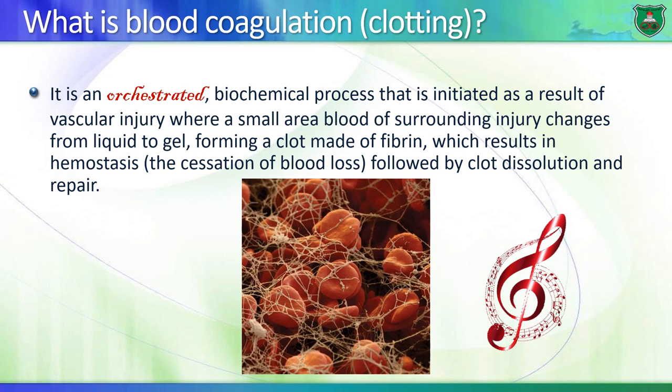Blood coagulation is a biochemical process initiated as a result of vascular injury. You have an injury in a small area and blood in this area changes from liquid to gel - basically the formation of a clot of fibers of a protein known as fibrin. That results in hemostasis, so there is no more blood loss, and then this is followed by clot dissolution and repair. That is the end of the symphony.